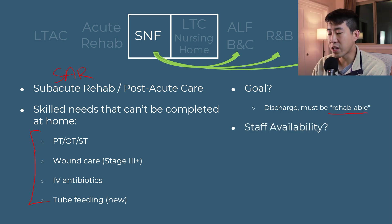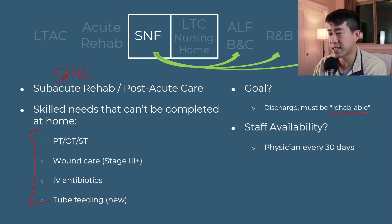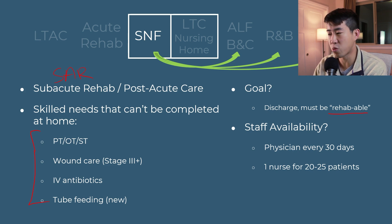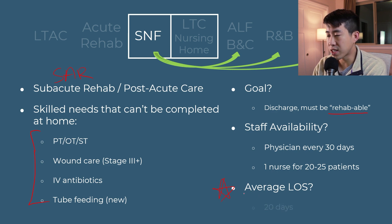In terms of staff availability, a physician must evaluate a patient in a skilled nursing facility once every 30 days, and then after the first 90 days, that can change to once every 60 days. In terms of the nurse-to-patient ratio, we generally see ratios such as one nurse for 20 to 25 patients — a big difference from the hospital where you typically have one nurse to four patients. The average length of stay for patients in a skilled nursing facility is about 20 days.